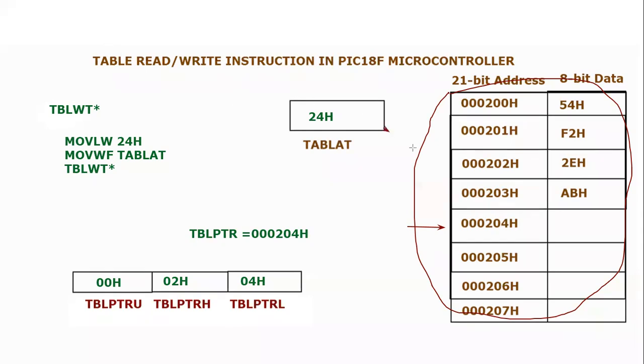That means program memory location 000204 hex will have 24 hex. I hope you have understood. This is a very unique way in which you can utilize a program to write the fixed data inside the program memory during the execution of program.